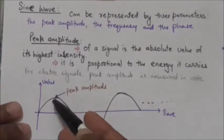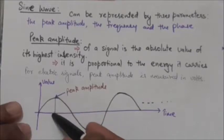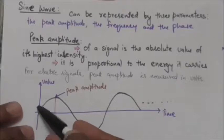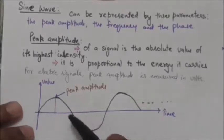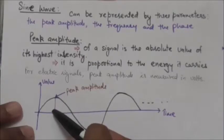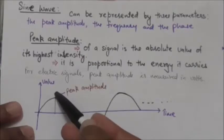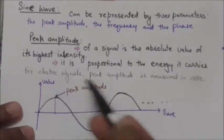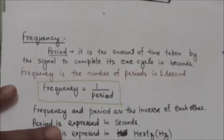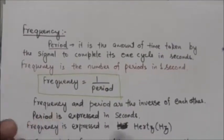So the peak amplitude of a signal is the absolute value of its highest intensity. For this signal, you can see its peak amplitude — it is the absolute value of its highest intensity. Next we will study about the frequency of a signal.